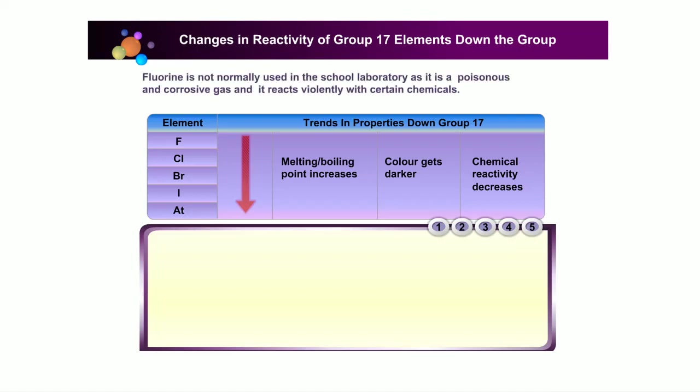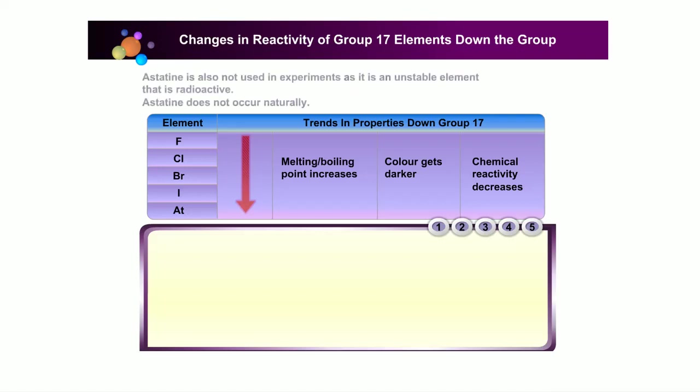The experiments conducted are based on the reactions of chlorine, bromine, and iodine. Fluorine is not normally used in the school laboratory as it is a poisonous and corrosive gas that reacts violently with certain chemicals. Astatine is also not used in the school laboratory as it is an unstable, radioactive element that does not occur naturally.